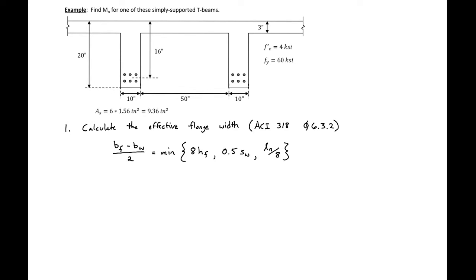In this example problem we're going to find the nominal moment capacity for a simply supported T-beam. This T-beam has an overall depth of 20 inches. It's part of a one-way slab on beams system, so we have continuous slabs running in the transverse direction.